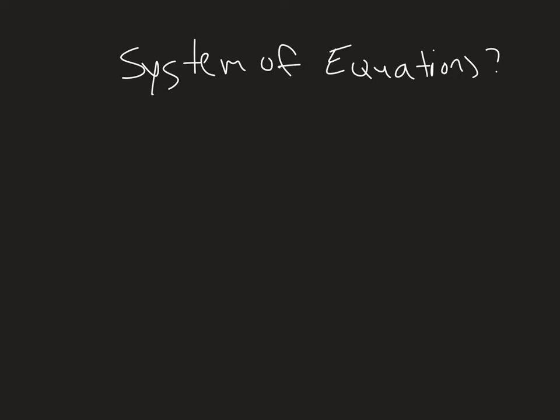So the first question is, what is a system of equations? A system of equations is just simply if I have two equations with two variables, or more variables even. So say we have y equals x squared, and we have y equals 3x plus 2.